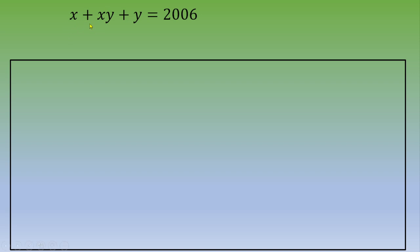We have an addition of three terms and we would like to transform that into a multiplication. First, let's factor the first two terms, and we end up with x times (1 plus y), plus y, equals 2006.